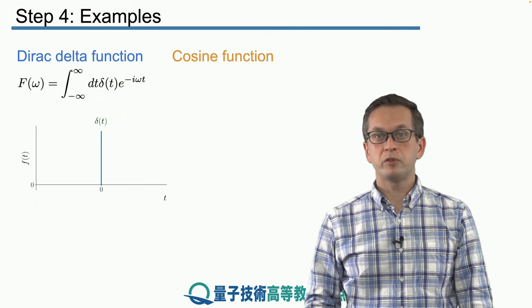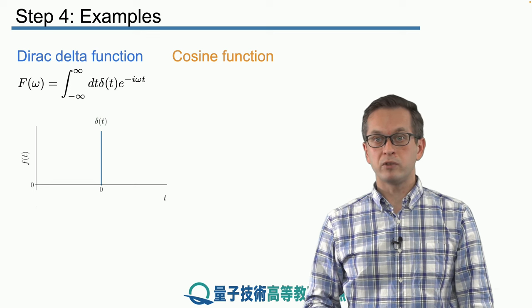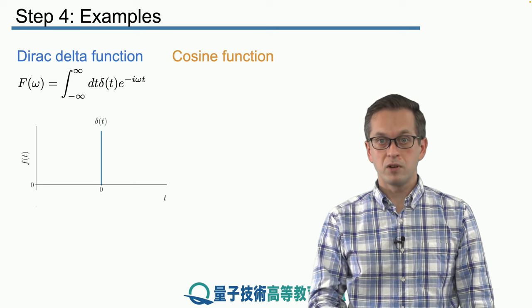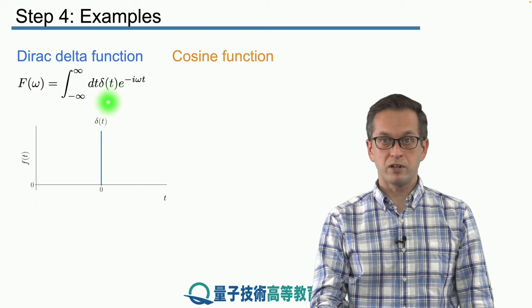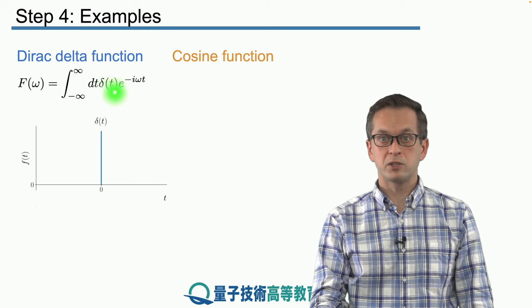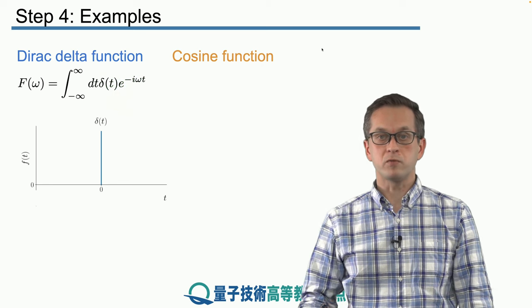then all the contributions are 0 except for when t is equal to 0. So when t is equal to 0, the Dirac delta function is non-zero and this exponential just becomes e to the power of 0, which is 1.